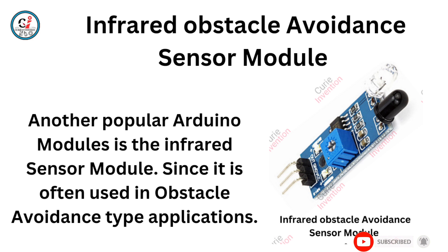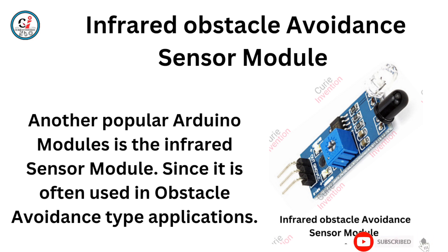Infrared Obstacle Avoidance Sensor Module. Another popular Arduino module is the Infrared Sensor Module, since it is often used in obstacle avoidance type applications.